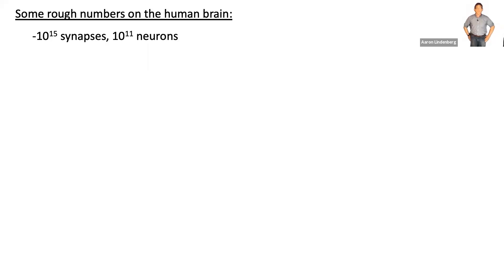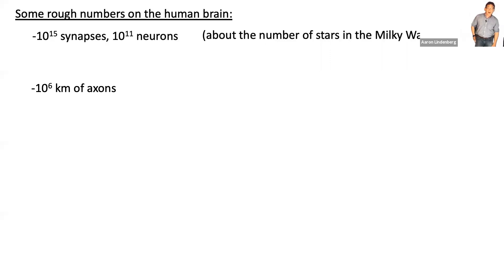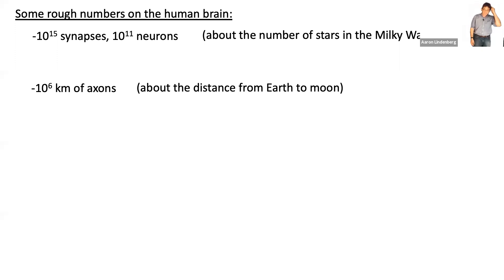The brain is an amazing thing. Your brain is made up of synapses and neurons. There are something like 10 to the 15 synapses and 10 to the 11 neurons in the human brain — really unimaginably large numbers. The number of neurons in your brain is comparable to the number of stars in the Milky Way galaxy. The neurons and synapses are connected by long wires — your brain really is like an electrical structure with electrical signals bouncing back and forth. If you took all these axons that connect one neuron to another and lined them up, within a single human brain you would get a distance of the order of 10 to the 6 kilometers — 1 million kilometers — roughly the distance from the earth to the moon, all wrapped up inside your head.